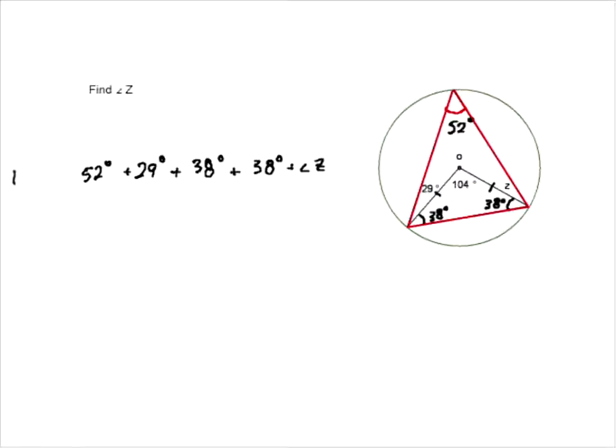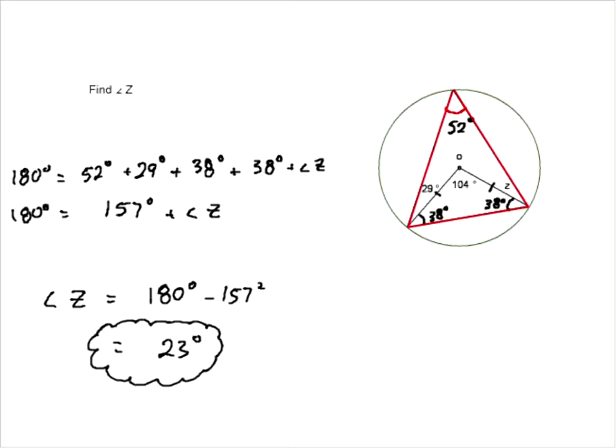Now, if we add up all these values, we figure out here that 52 plus 29 is 81, plus 38 is 119, plus 38 is 157. So we have 157 degrees, plus angle z, equals 180 degrees. So we know that angle z must equal 180 degrees minus 157 degrees. So angle z equals 23 degrees. So it's close to 29, but definitely not the same, and we cannot assume that from the picture.